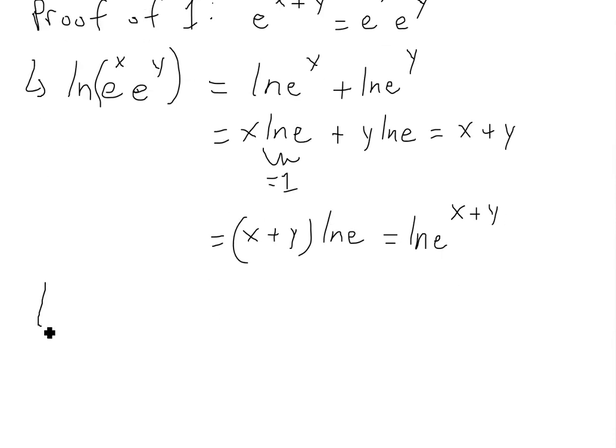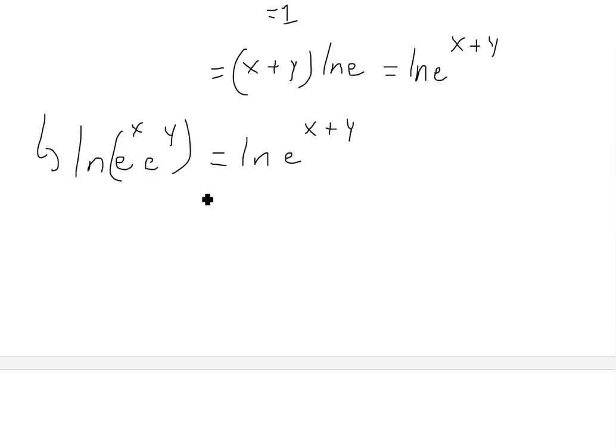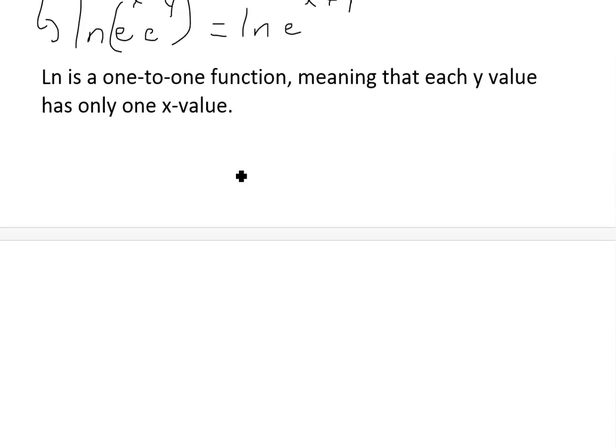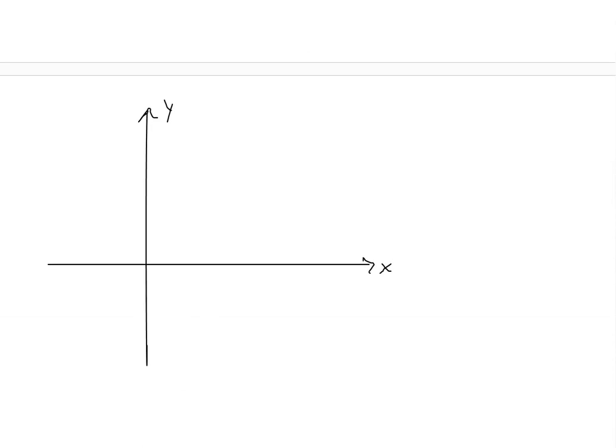So we get ln of e to the x times e to the y equals ln of e to the x plus y. And we also know that ln is a one-to-one function, meaning that each y value has only one x value. In other words, if you were to graph it, it would look something like this. This is a graph of ln.